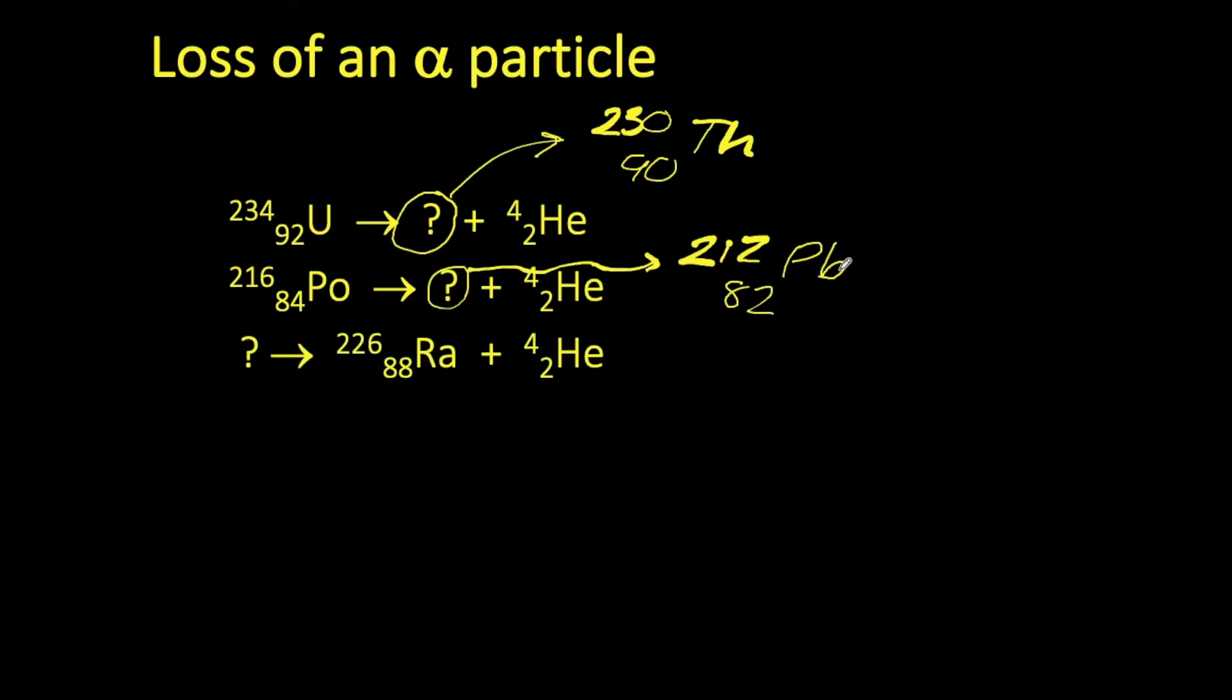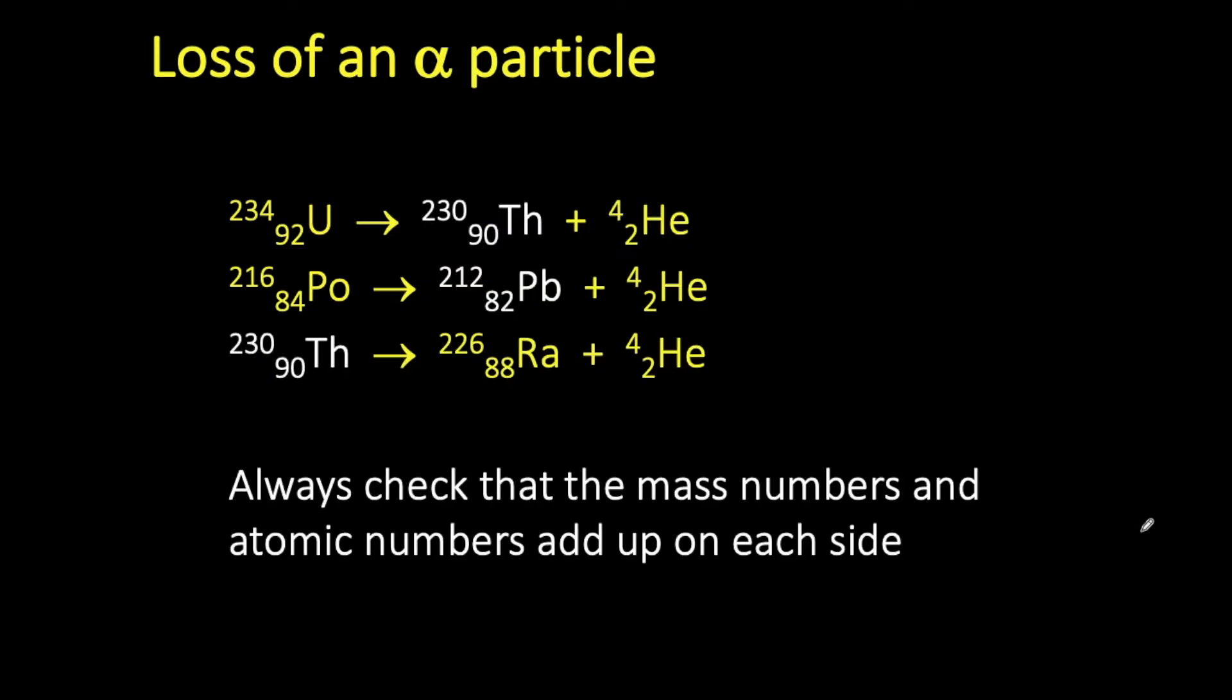Now this final example requires us to work backwards. So we know that our mystery element had undergone alpha decay to form radium. So if I have radium with a mass number of 226 on the right hand side, plus our helium or alpha particle with a mass of 4, it means our original atom on the left had a total mass of 230. Its atomic number would have been 88 plus 2, which is 90. And if we consult our data booklet, the element with the atomic number 90 is thorium. When you are doing these, always check that your mass numbers and atomic numbers add up on each side.